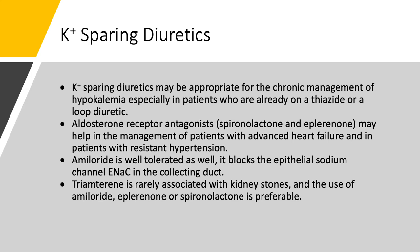What about potassium-sparing diuretics? They are appropriate for the management of hypokalemia, especially if the patient is already taking a diuretic like a thiazide or a loop diuretic. Sometimes it's very hard to keep up with hypokalemia, and potassium pills are large, hard to swallow, and patients hate them — so it makes a lot of sense to give a potassium-sparing diuretic alongside a thiazide or loop diuretic. Aldosterone receptor antagonists like spironolactone or eplerenone may help, especially in patients with advanced congestive heart failure and resistant hypertension. Amiloride is a good choice — it's well-tolerated and blocks the epithelial sodium channel — but it's not appropriate for post-MI patients or advanced CHF because it has never been studied in that regard. Triamterene is rarely used nowadays as it can cause kidney stones.